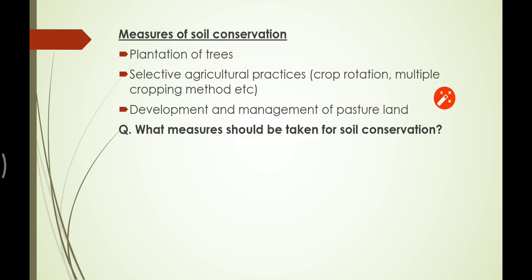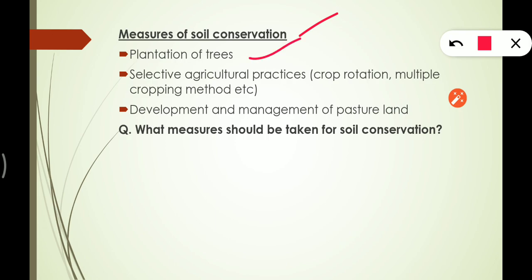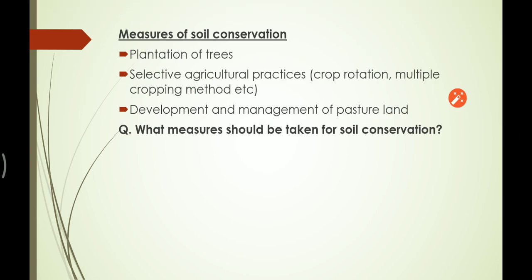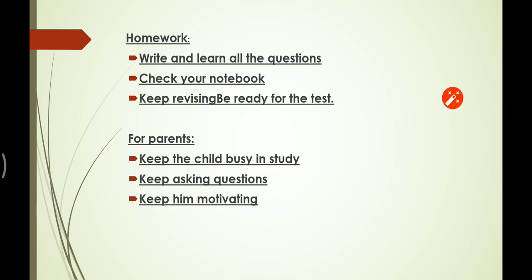Measures of soil conservation include plantation of trees, selective agricultural practices such as crop rotation and multiple cropping methods, and development and management of pasture land.